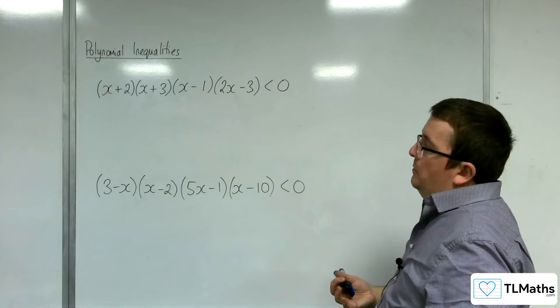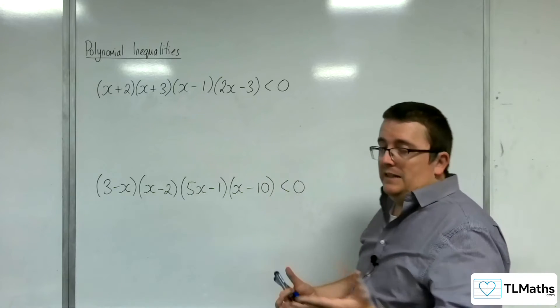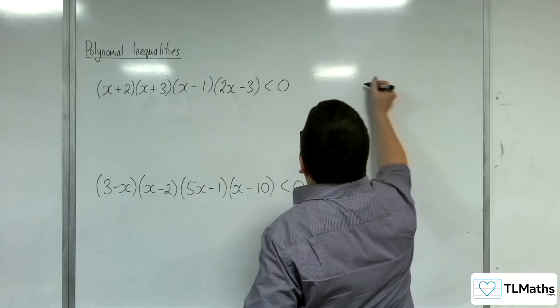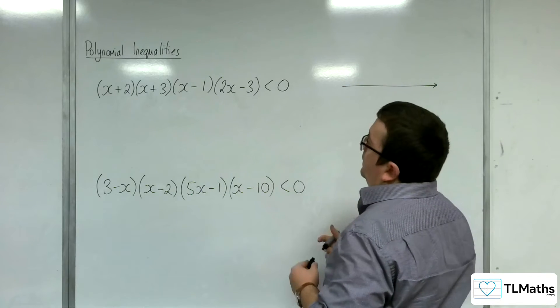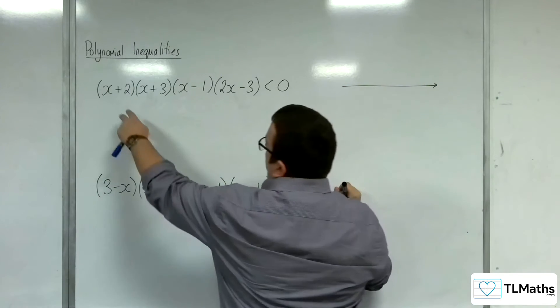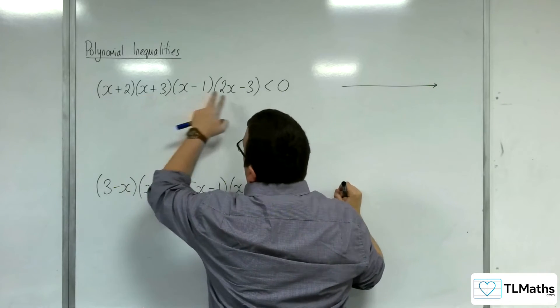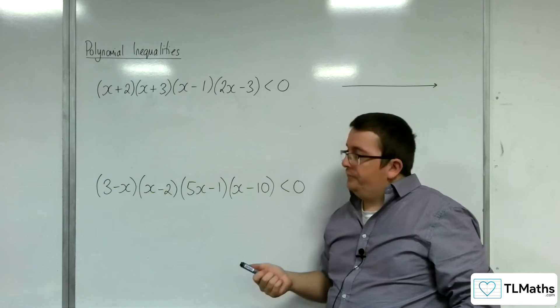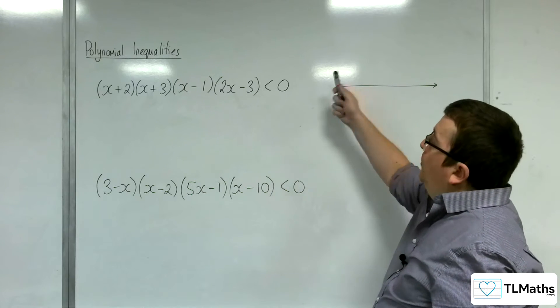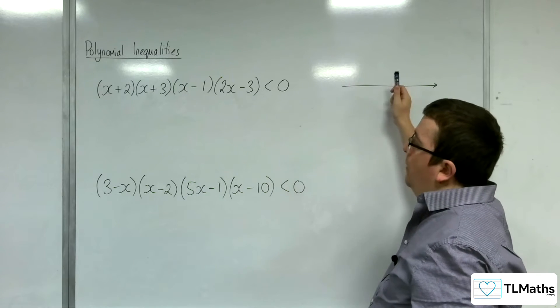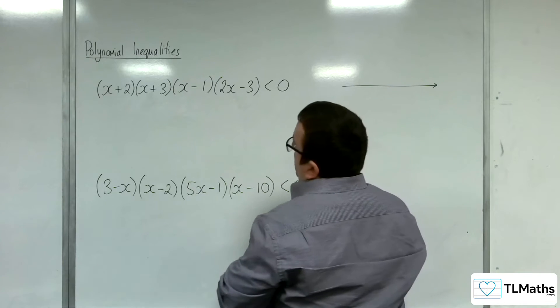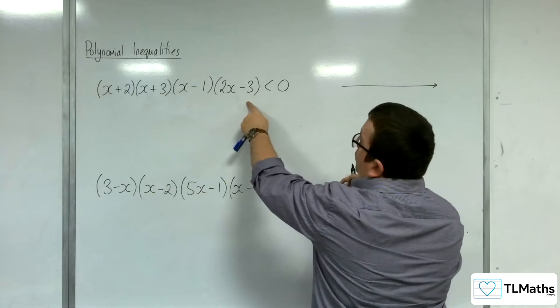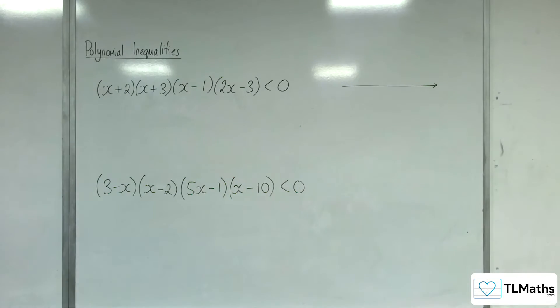So let's have a look at the first example. This is going to work in exactly the same way. I'm going to first of all draw a diagram that shows my quartic. So we have a quartic that's going through minus 2, minus 3, 1, and 3 halves. Now, a quartic curve starts at the top left and works its way to the top right. A positive one does, and consequently this is going to be crossing through the x-axis four times.